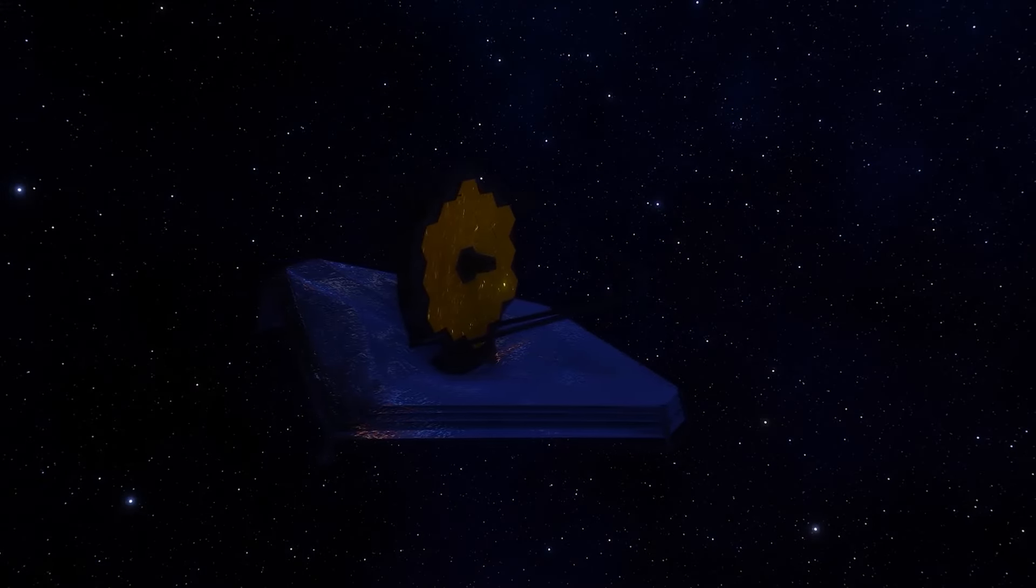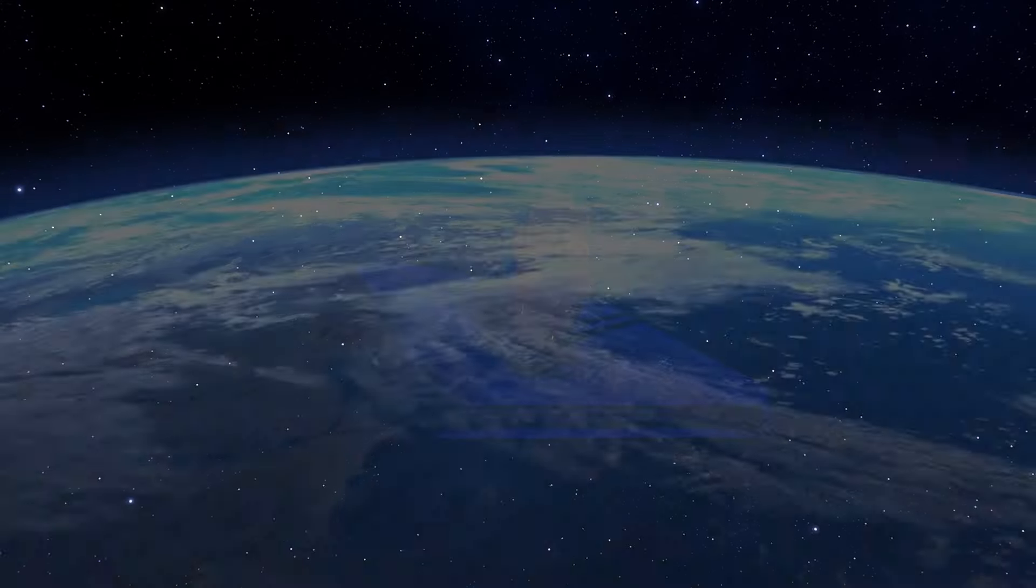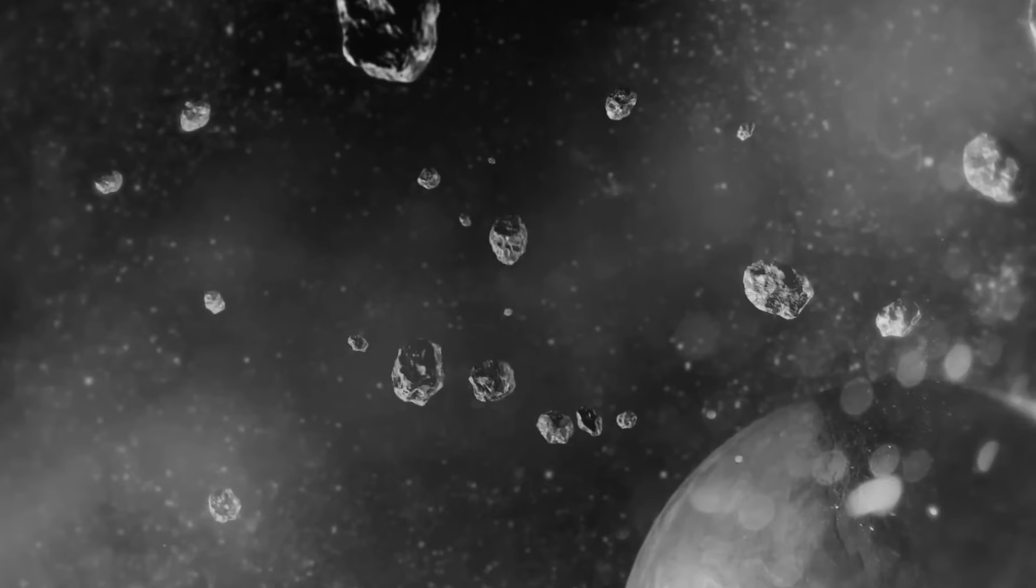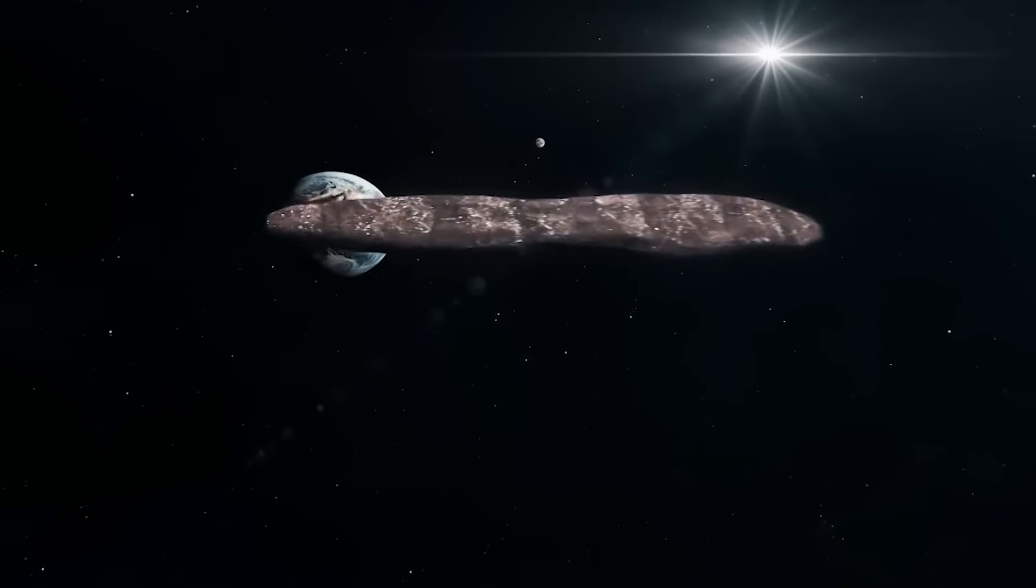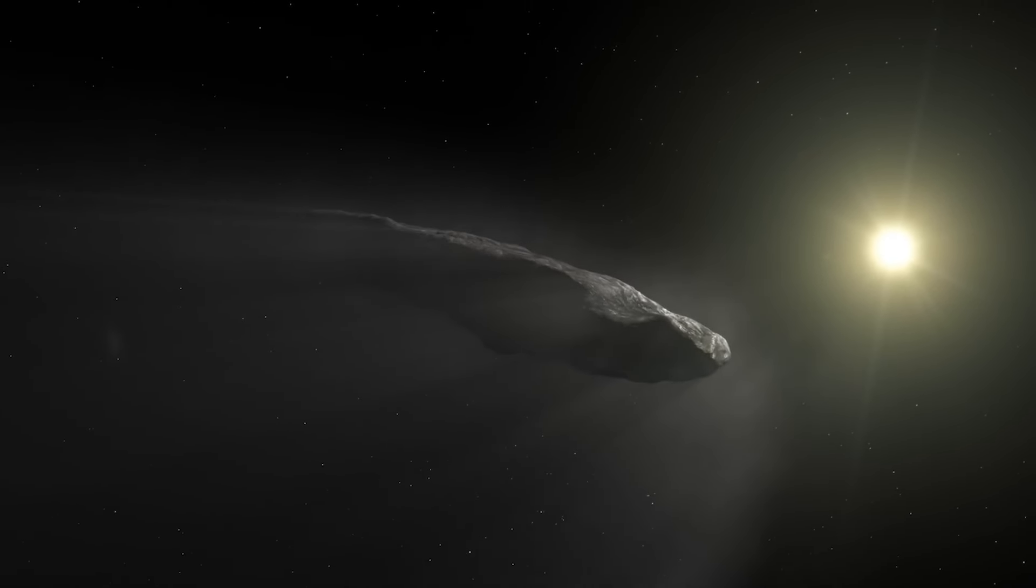Since their launch, these telescopes have revealed numerous findings in space, including the capture of images of large objects in space and the detection of a visitor coming from a considerable distance. This visitor, known as Oumuamua, is an object of interesting and peculiar origin that passed through our solar system.